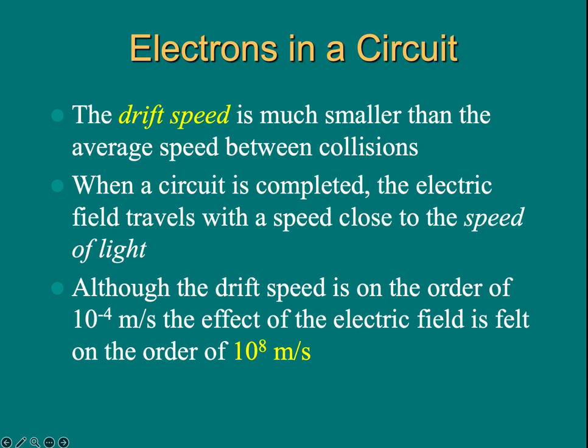When the circuit is complete, the electric field travels with the speed close to the speed of light. The drifting speed of the charge carrier in terms of conductors and metals is very small. The drifting speed is only 10 to the minus 4 meter per second. But the electric field will be propagated inside the metal at the speed of 3 times 10 to the 8 meter per second.